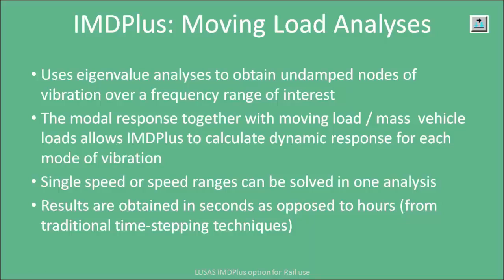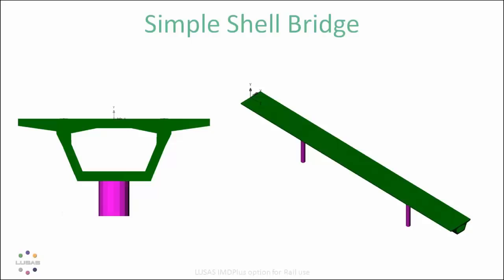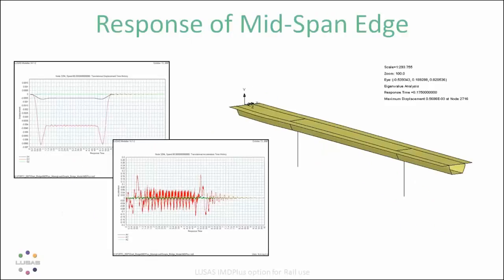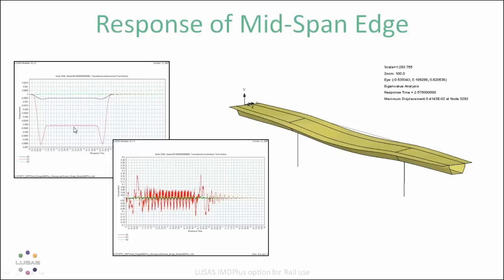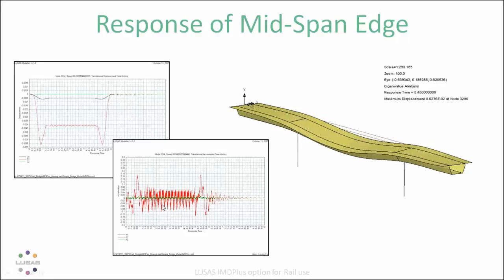Here is a simple shell bridge model. On the right there's an animation showing how the structure deforms — greatly exaggerated — as the train crosses. On the left is a nodal plot of displacement in X, Y, and Z directions. The red vertical direction shows two peaks at the beginning and end of the loading event because the train has an engine at the front and one at the back — a push-pull arrangement. The vibrations in between are the bogies of the coach system passing across. A second plot shows how the midpoint of the structure behaves in terms of acceleration.